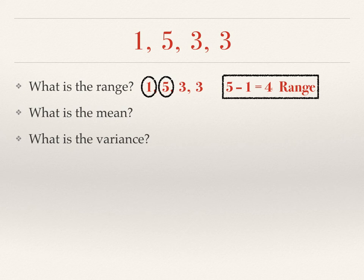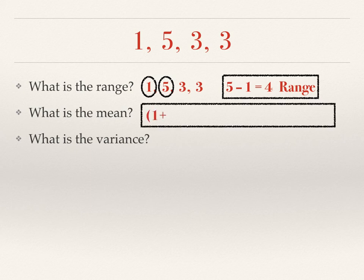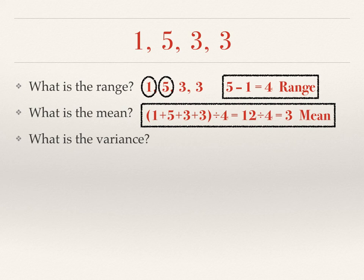To find the mean, we add up all of the numbers and then divide by the number of items in the set. So one plus five plus three plus three equals twelve, and twelve divided by four is three. And so the mean of this data set is three.